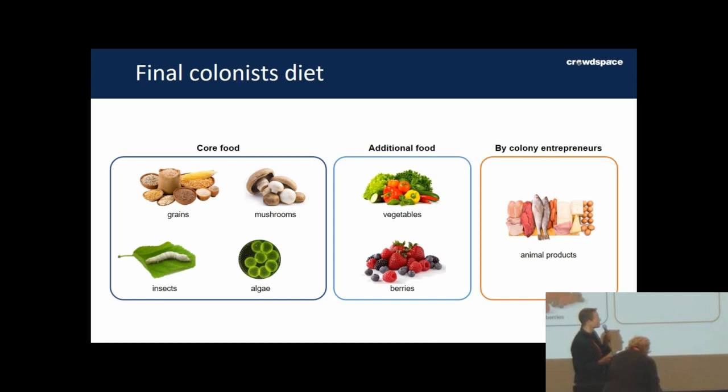Here is how the diet of colonists will look like. There is core food that I just described. Then, of course, people want to eat something tasty, and additional food will contain some vegetables and berries. Finally, as we plan, there will also be some options for fish and meat, but probably it will not be the basic diet. There could be some entrepreneurs on Mars that will grow tilapia or goats, maybe chicken. This is how colonists will get a more diverse diet.